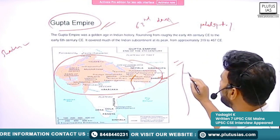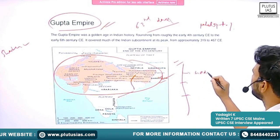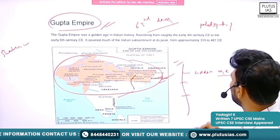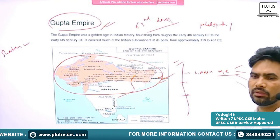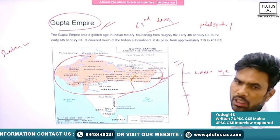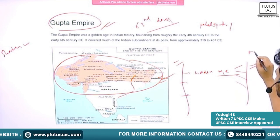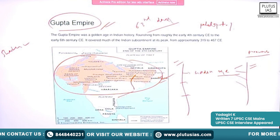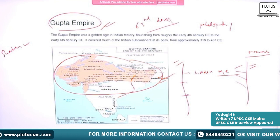Earlier historians used to call this age the 'golden age.' One reason for this is that we have a lot of information about the kings — through the Puranas especially — we know the lineage of kings like Chandragupta I, Samudragupta, and Chandragupta II. Because of this, some historians called it the golden age.